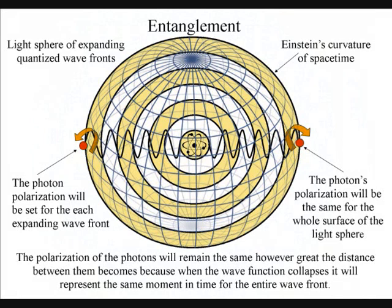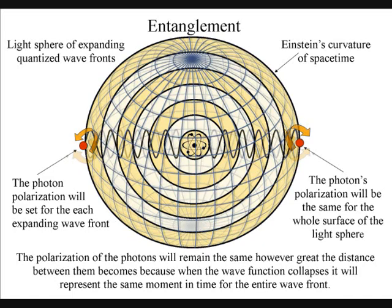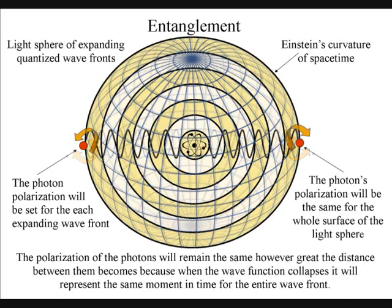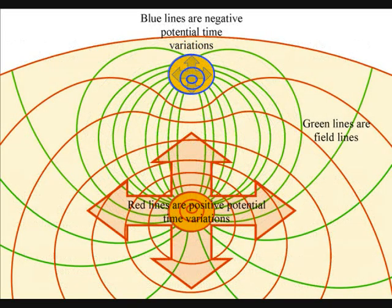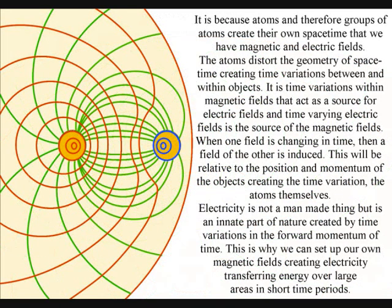The polarization of the light will be the same for the entire surface of the light square, creating quantum entanglement and the symmetry and geometry of space-time. In this theory, it is because the atoms can distort the geometry of space and time that we have electromagnetic fields.